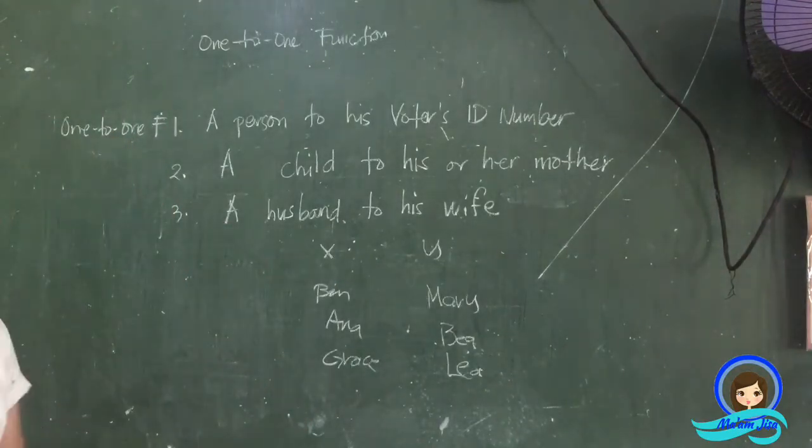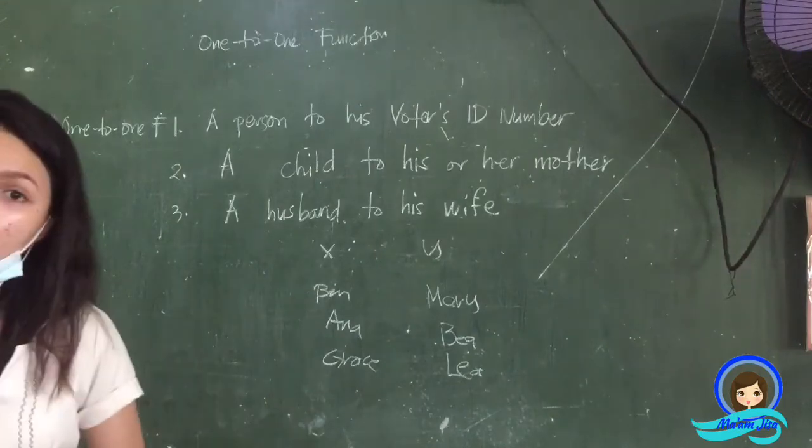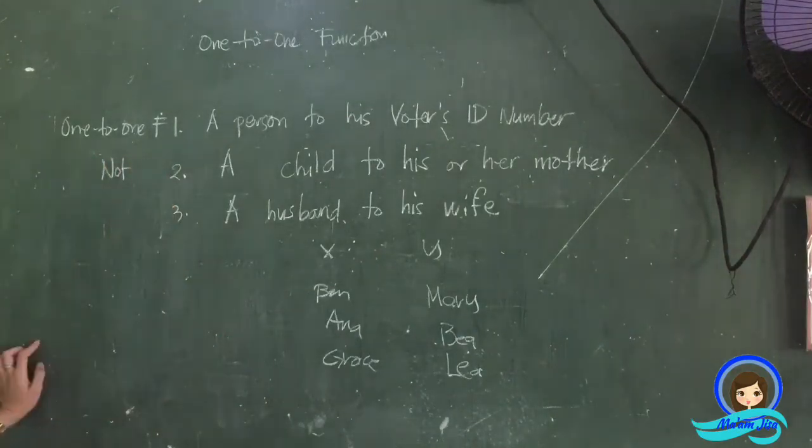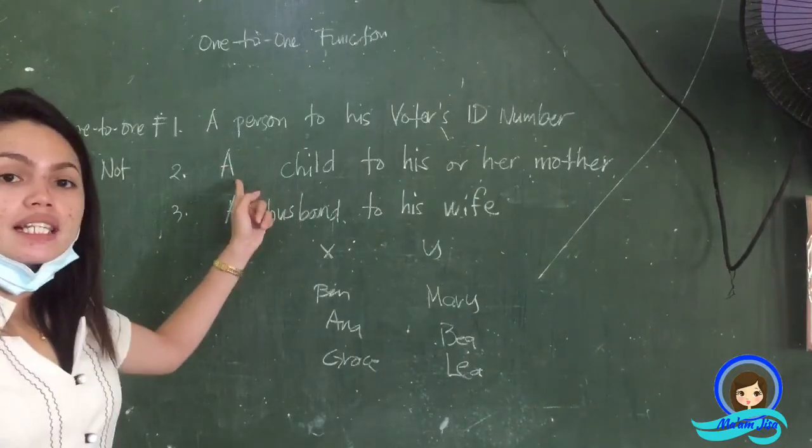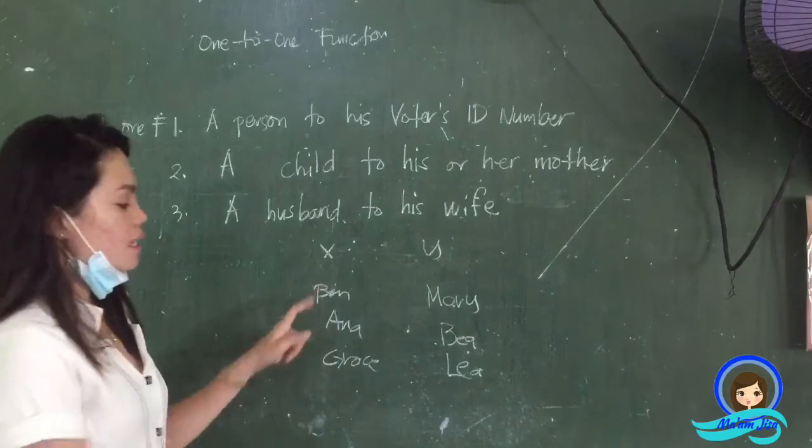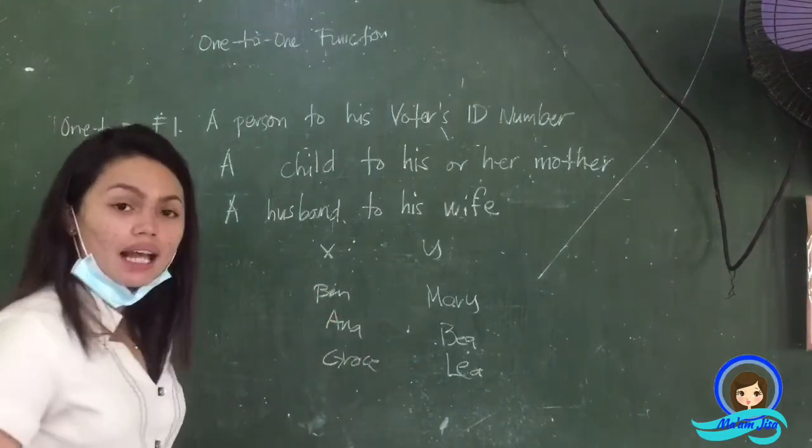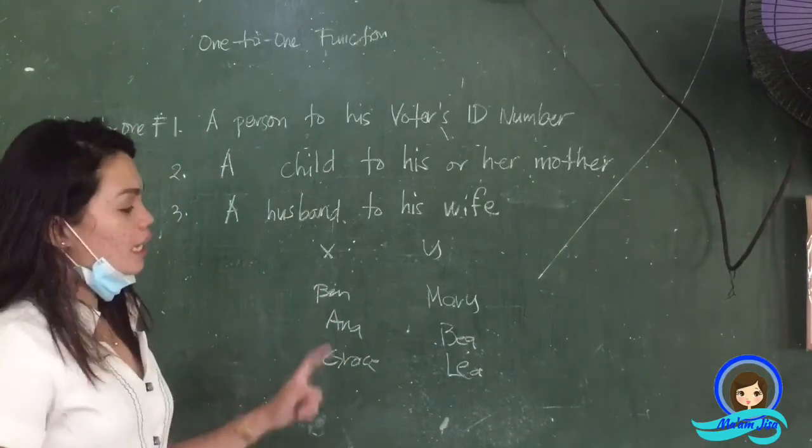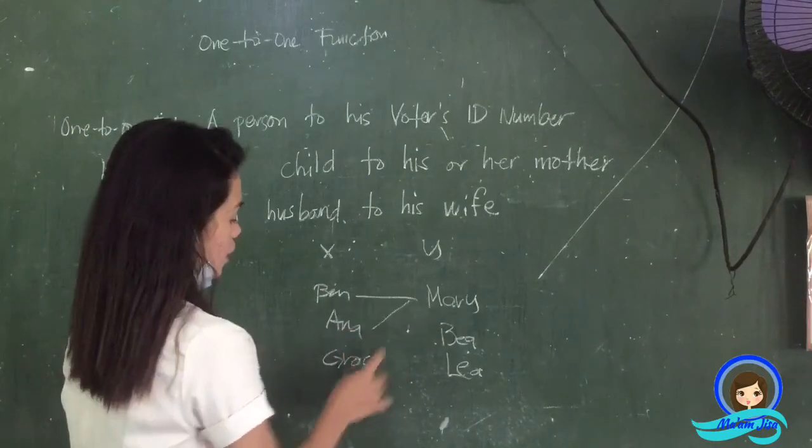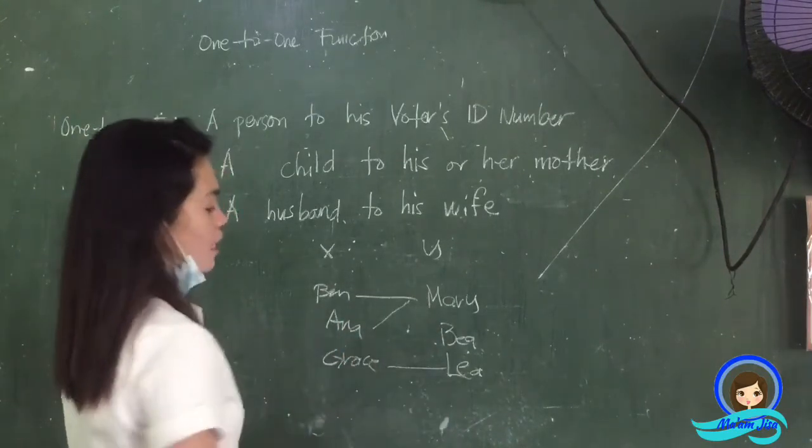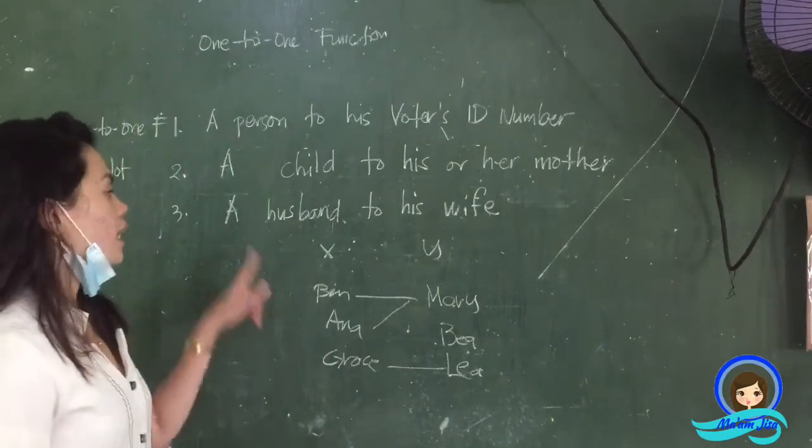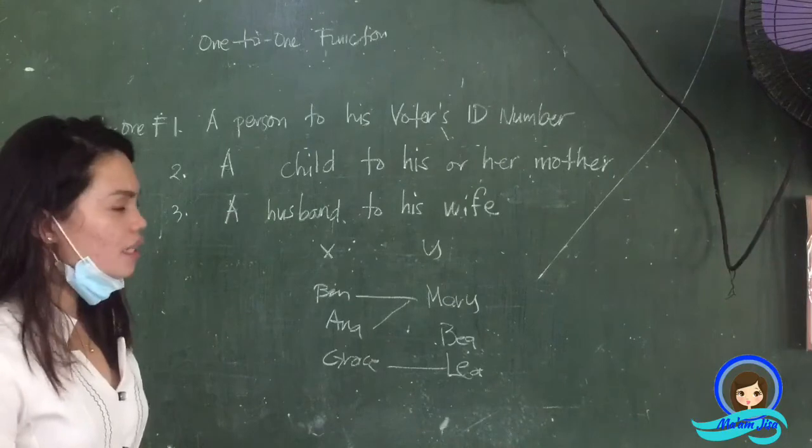Number two: a child to his or her mother is a function but not one-to-one. Again, number two is a function but not one-to-one. Why? It's because si Ben o si Ana pwidi man siya, si Ben o si Ana pwidi man nga igsuon sila. Ilang mama si Mary, si Grace ilang mama si Leah. So this is a function but not one-to-one.